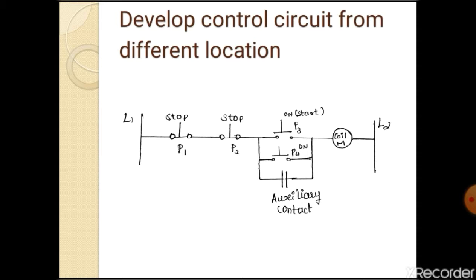Second one is develop control circuit from different location means there are two locations we are going to control the circuit. It consists of stop button, stop button to top button P1, P2, P3, start button P4, start button, auxiliary contact and motor. When push button P3 and P4 is pressed the current will flow from line to the neutral and the coil gets energized.